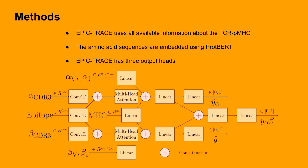Our model uses all available information, and we use PROT-BERT to contextualize the amino acid sequences — that is, the CDR3 regions of both alpha and beta chains and the epitope. The V and J and MHC gene information is inputted as one-hot vectors to the model. Our architecture uses convolution and multi-head self-attention to make the prediction. One of the three output heads is used depending on the availability of the TCR chains for the given data point, meaning the model benefits from a data point even if only either chain is available.